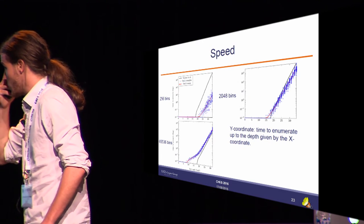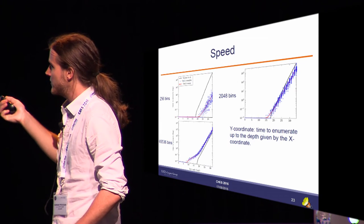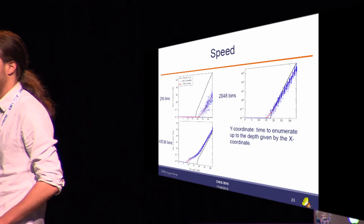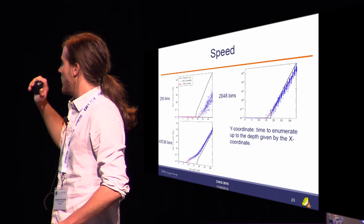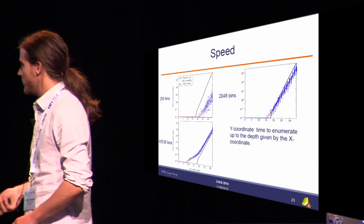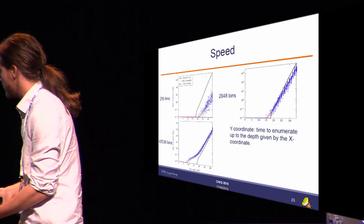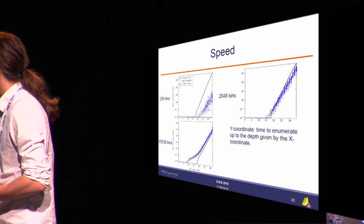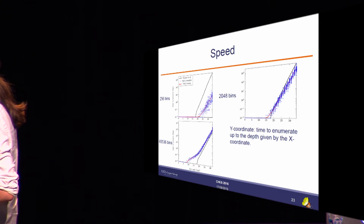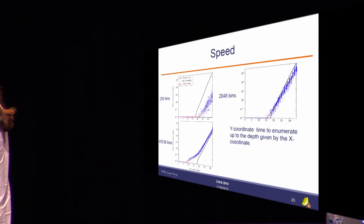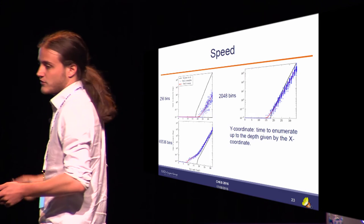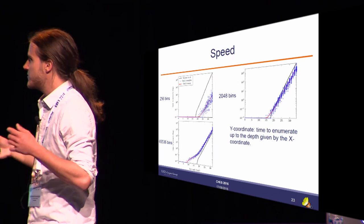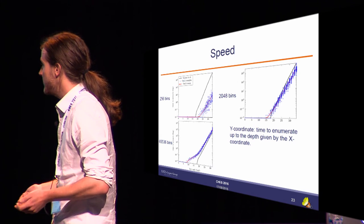Looking at speed: the y-axis shows time in seconds to enumerate up to the key rank on the x-axis. In black is the optimal Veyrat-Charvillon algorithm; in red is our algorithm averaged over 1,000 experiments; blue crosses are individual samples. Taking more bins makes the algorithm slower. Notably, for the bottom graphs, the Veyrat-Charvillon algorithm cannot be used beyond a certain point because it consumes too much memory.